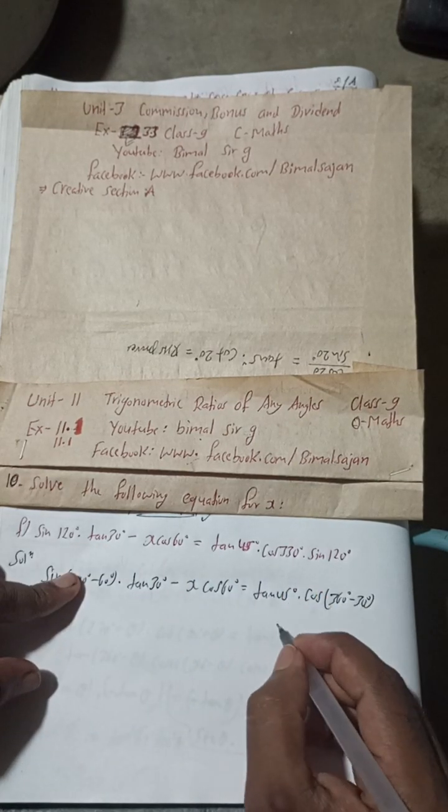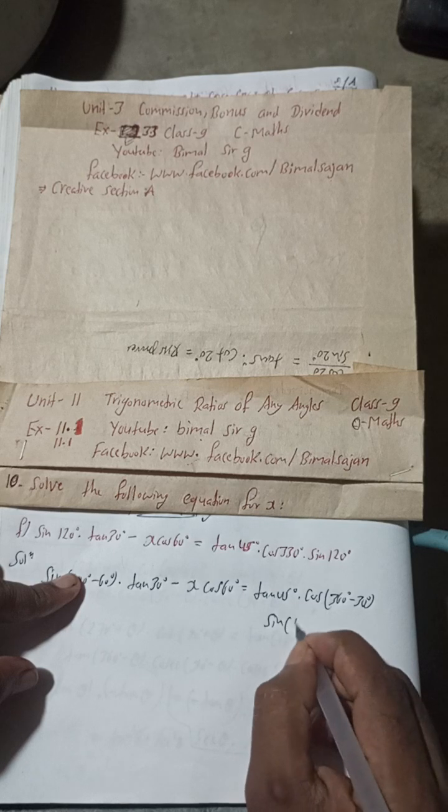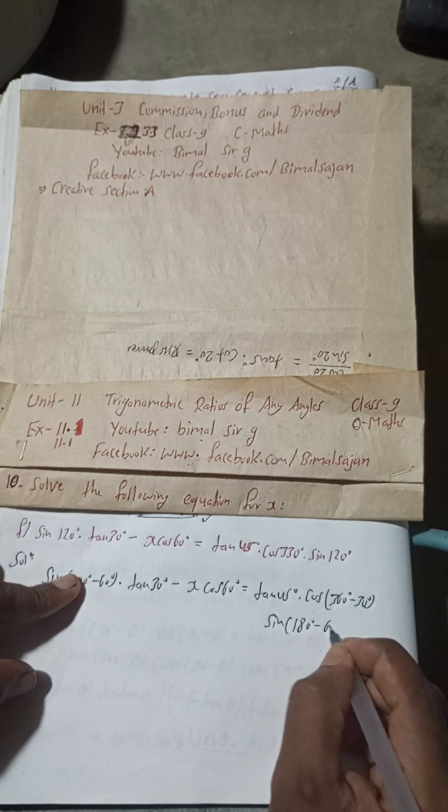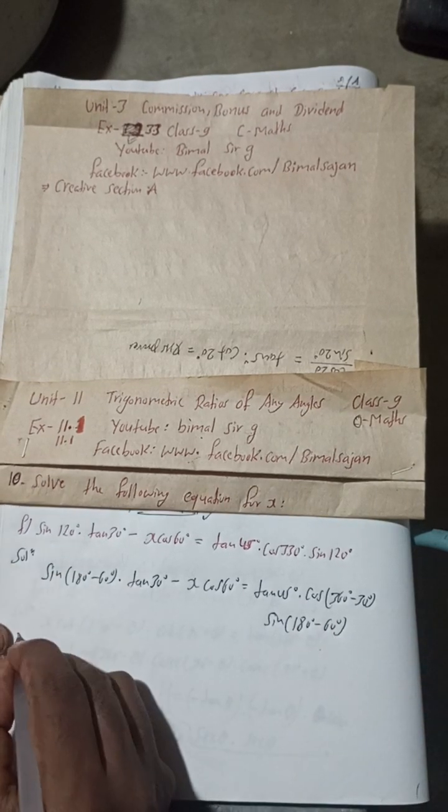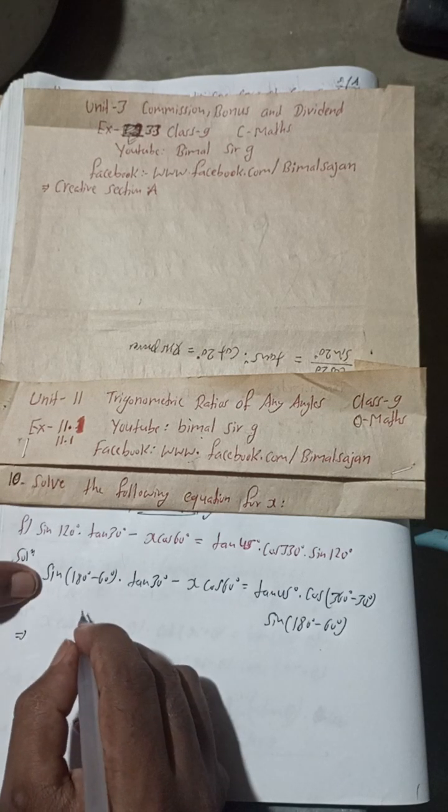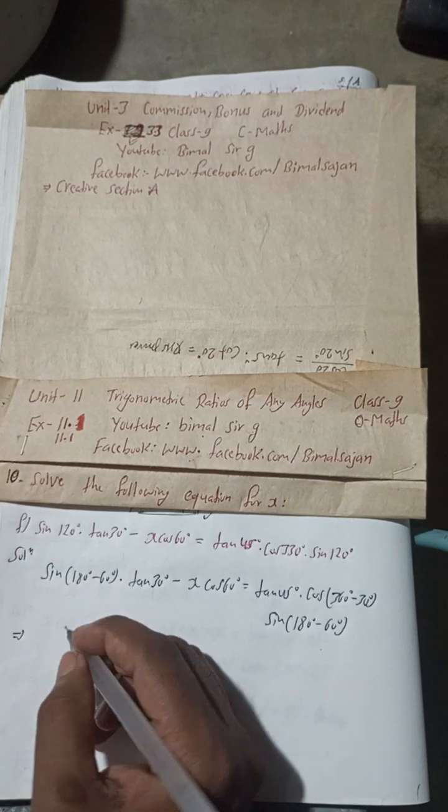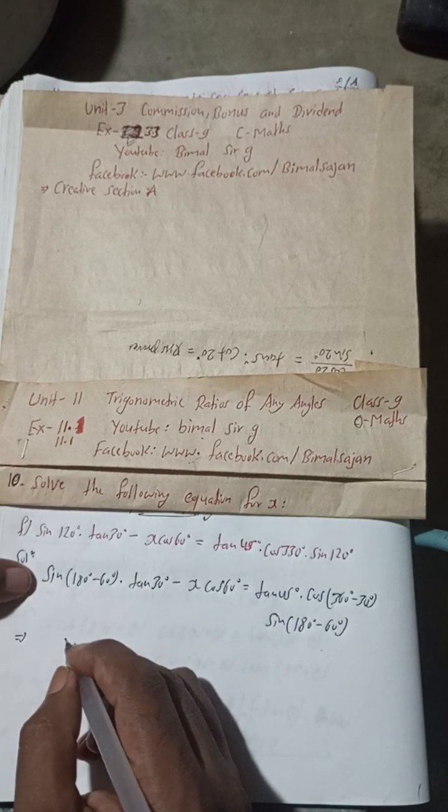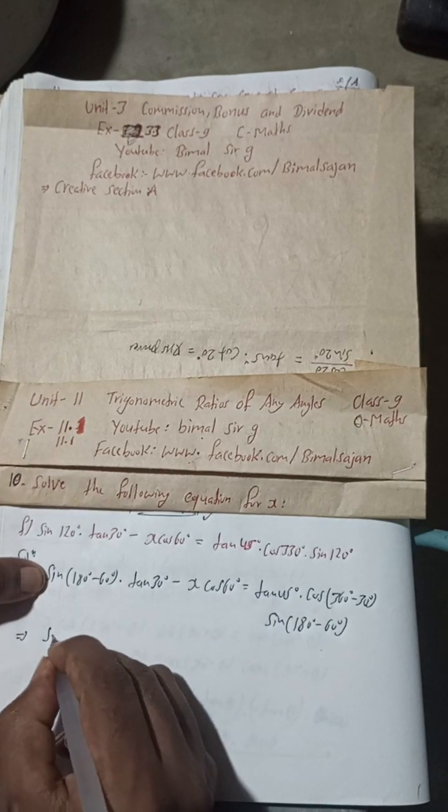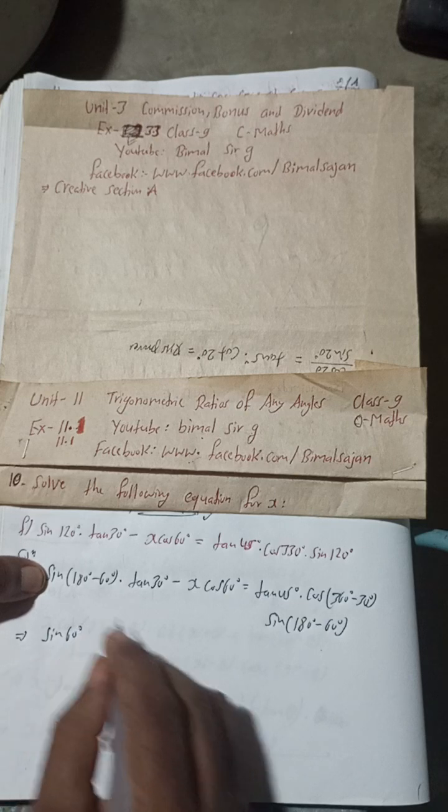Now this cos 330 can be written as 360 degree minus 30 degree, and this sin 120 can be written as sin 180 degree minus 60 degree. Now this sin 180 minus 60 will be sin 60 degree, but CAST rule.